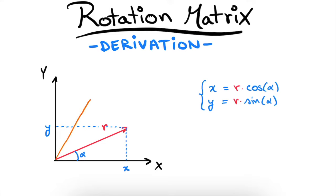Then we rotate our vector r over an angle beta and we get the vector r prime. This vector also has x and y components which we call x prime and y prime. And we see that this vector makes an angle alpha plus beta with the x-axis.